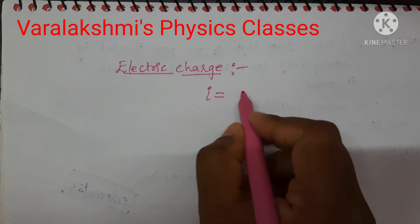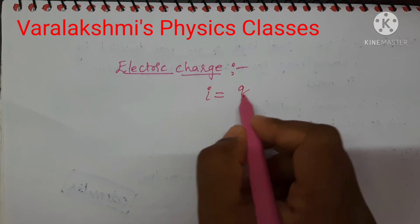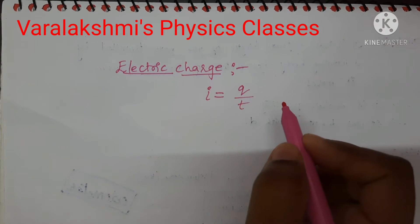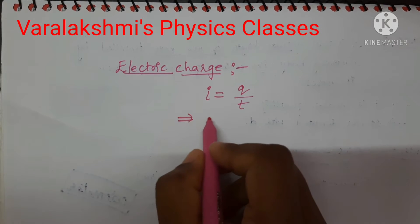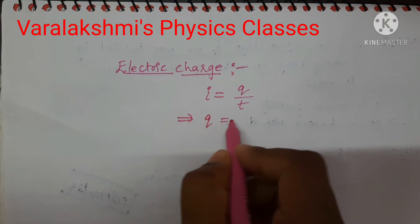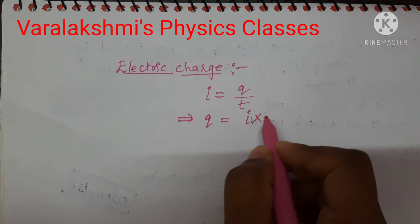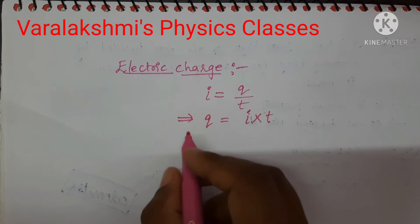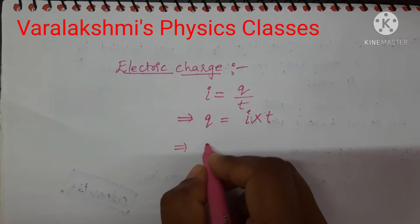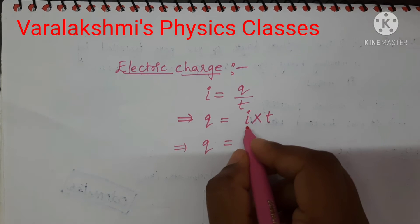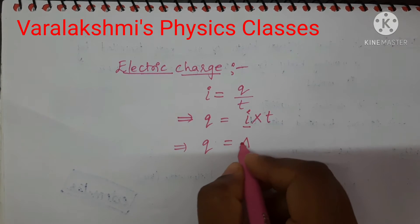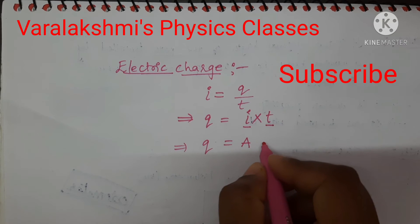Current I is equal to Q upon time T. This implies Q is equal to current multiplied by time. Write the SI unit for current, that is ampere, and now write the SI unit for time, that is second.